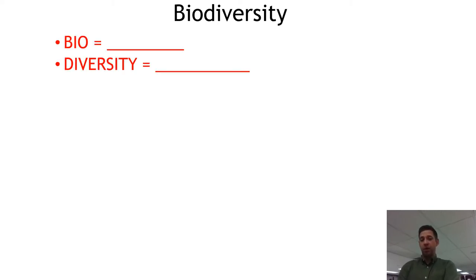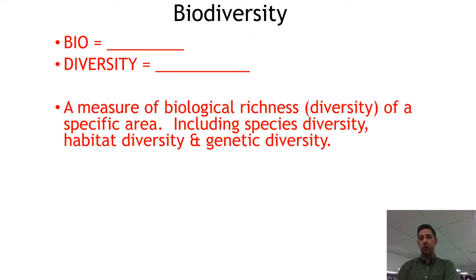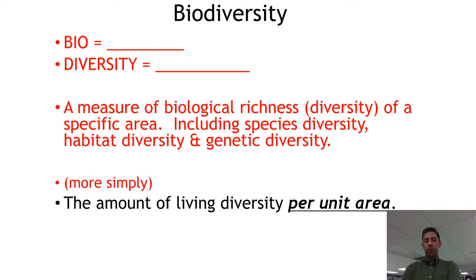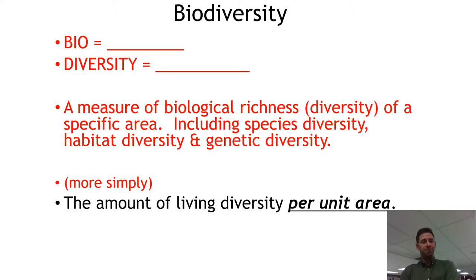Let's start with the term biodiversity. 'Bio' means life; 'diversity' means differences — so we're looking at the differences of living things. Scientifically, we define it as a measure of the biological richness of a specific area, including species, habitat, and genetic diversity. We could simplify it as the amount of living diversity. The IB is specific: this is always measured per unit area. A unit could be one square meter of soil, a single coral reef, or the country of Ecuador.